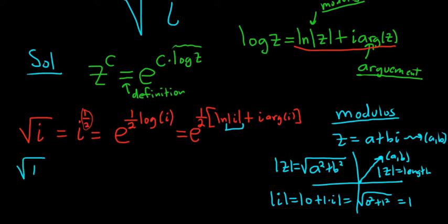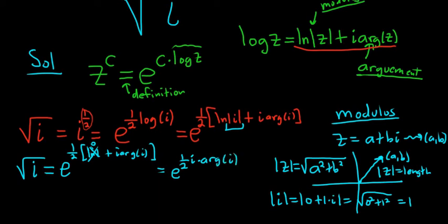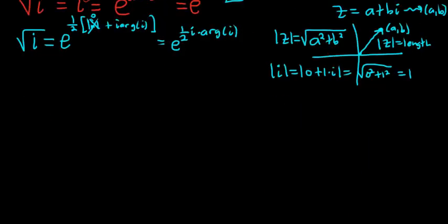So the square root of i is equal to e to the 1 half, and then we have the natural log of 1, which is 0, plus i arg i. The natural log of 1 is 0, so it goes away. So we end up with 1 half i times the argument of i. So now we have to talk about what the argument is.